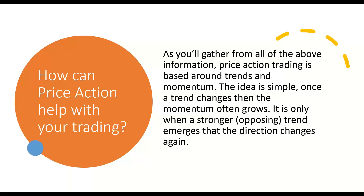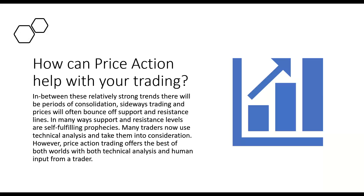As you gather from all the information, price action trading is based on trends and momentum. Once a trend changes, the momentum often grows. It's only when a stronger opposing trend emerges that the direction changes again. In between these relatively strong trends, there will be periods of consolidation, sideways trading, and price will bounce off of support and resistance — creating double tops and double bottoms. In many ways, support and resistance levels are self-fulfilling prophecies.